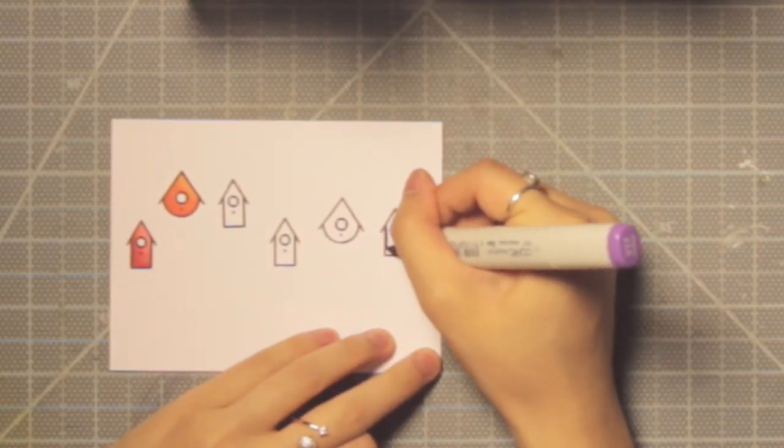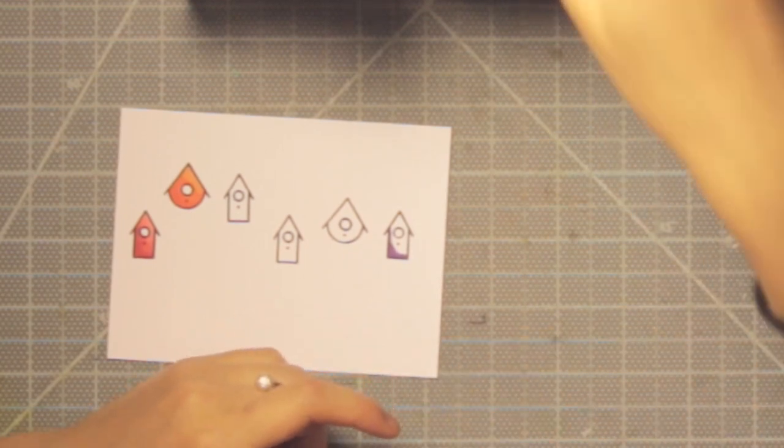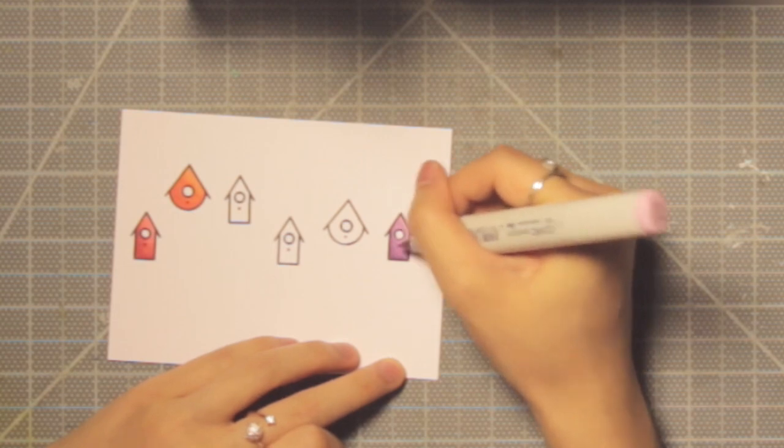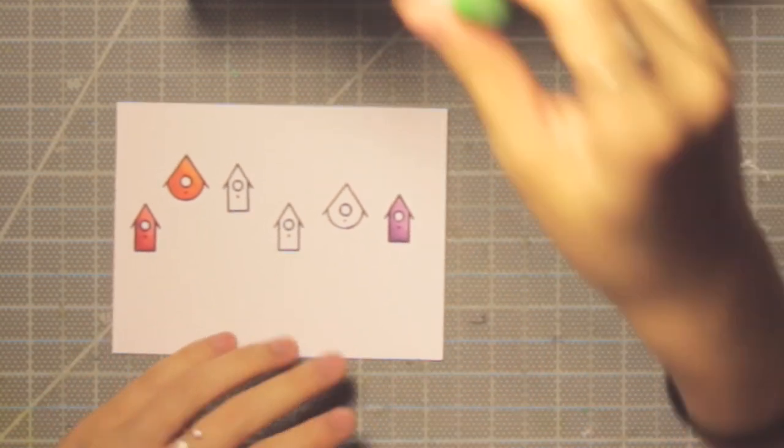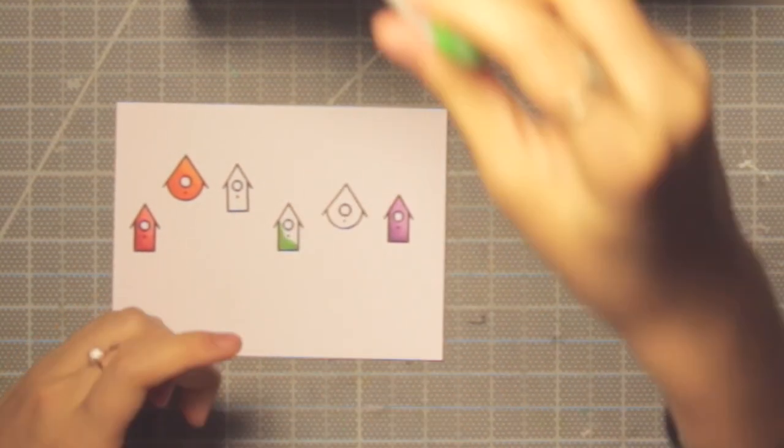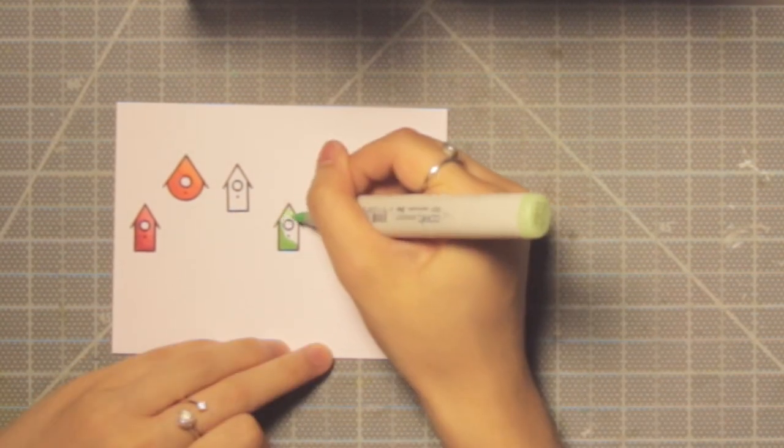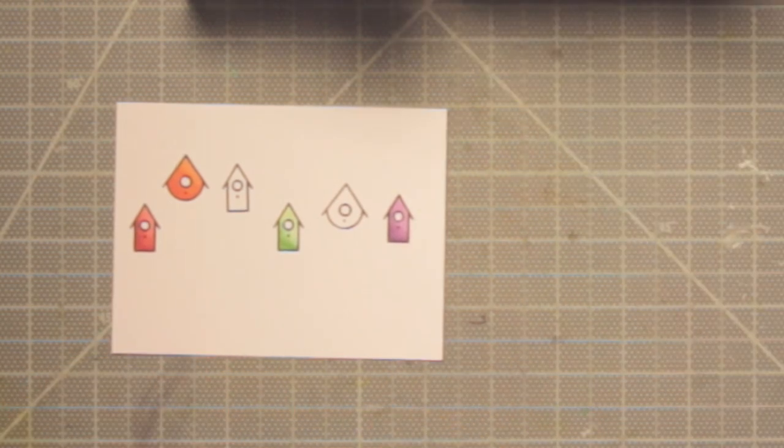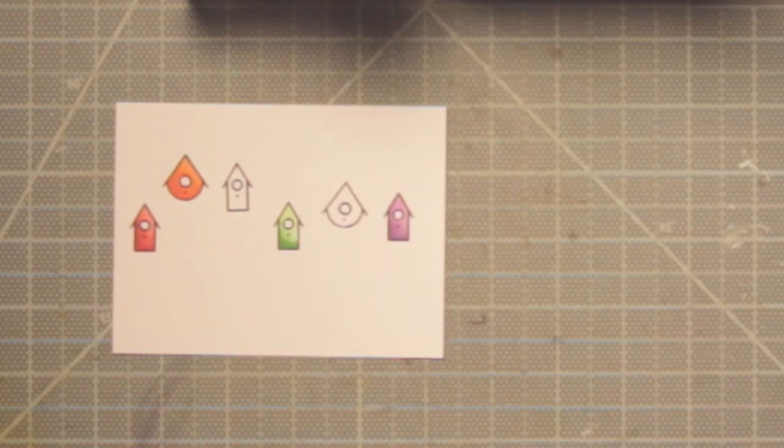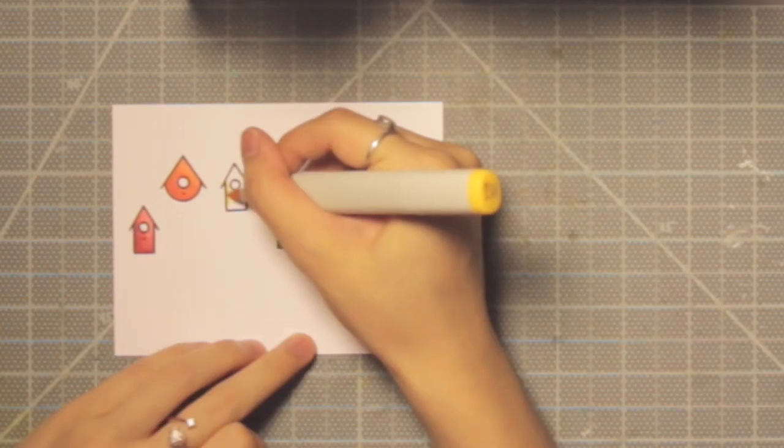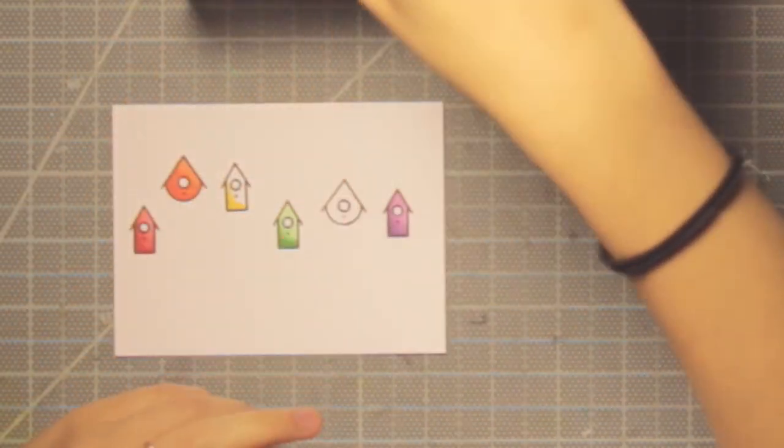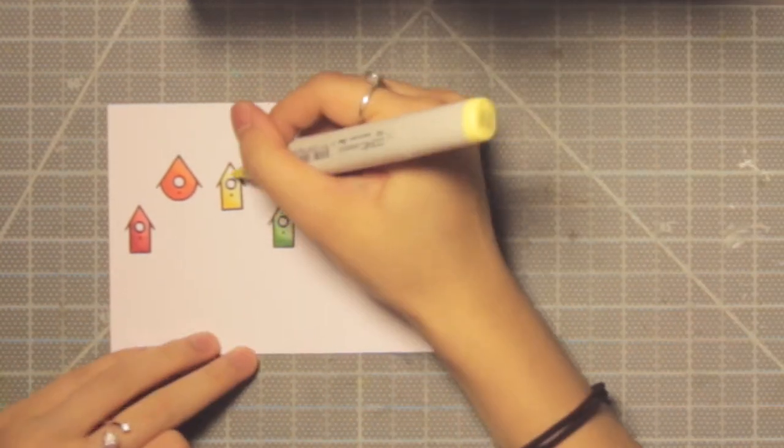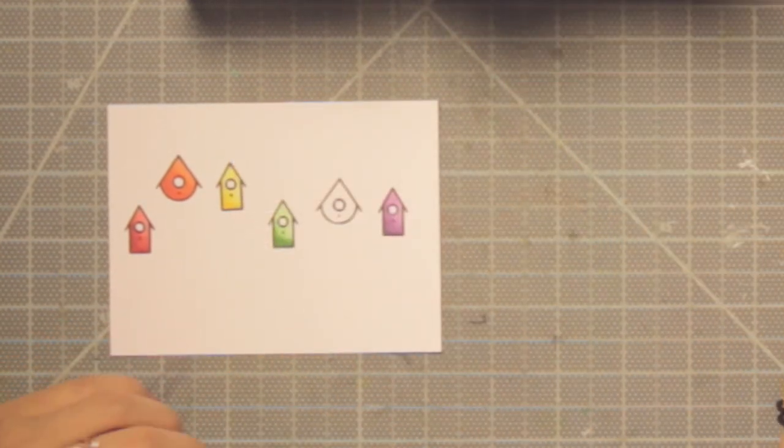So in the beginning, I started off with the typical Copic technique, which is you start with light, then go to medium and dark, and then blend that back out with medium and light. But I actually took a shortcut later on. You can see what I'm doing here is I'm just putting down the darker color and then blending that out with the medium or lighter colors. This just saves a little bit of time so you don't have to go back and forth. And this is really great since these are small images anyway, so it ends up working okay.